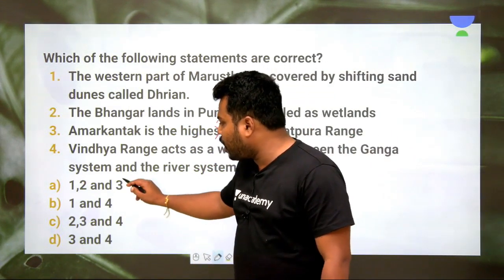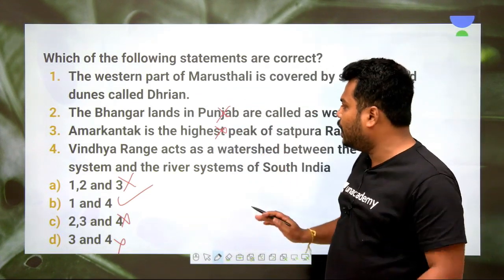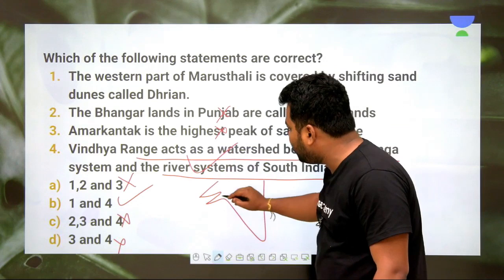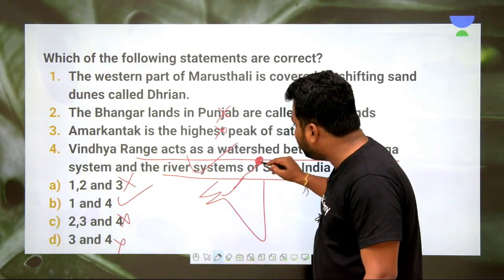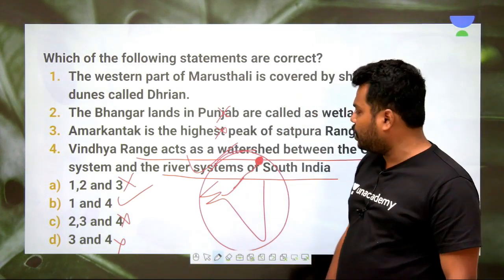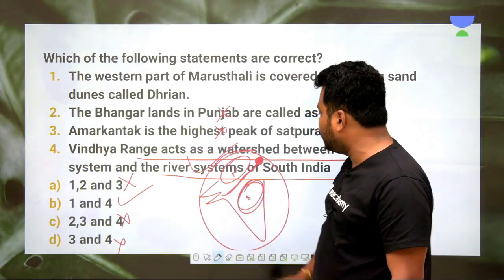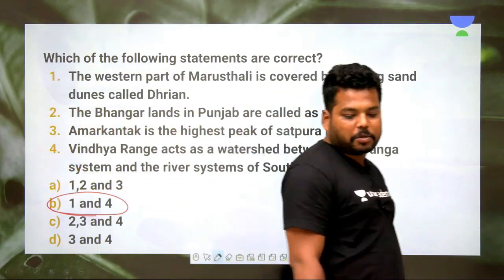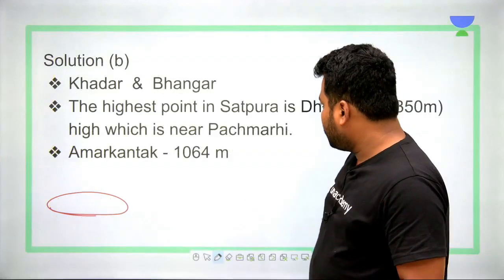Statements 2 and 3 are wrong, so eliminate options containing them. Statement 4: The Vindhya ranges act as a watershed between the Ganga river system and river systems of South India — absolutely true. The Vindhyas extend from Gujarat through Madhya Pradesh to Bihar, where they are called Kaimur Hills near Sasaram, acting as the watershed dividing northern and southern India's river systems. Hence the answer is statements 1 and 4.